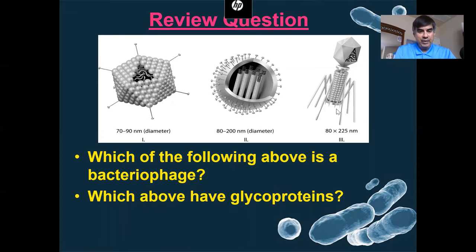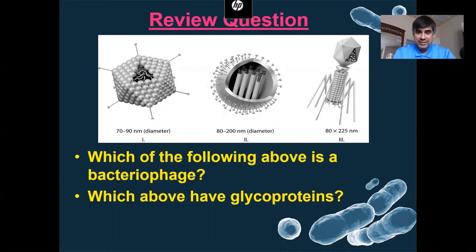Looking at this question here, notice we have three pictures of three different viruses. Your first question: which of the following is a bacterial phage? I'll give you maybe a minute to think about it. Question number two: which above have glycoproteins? These viruses — which of them are possibly showing glycoproteins? You have to know what a glycoprotein is.